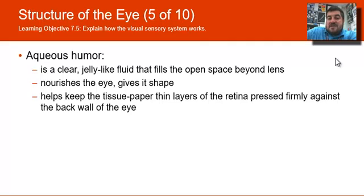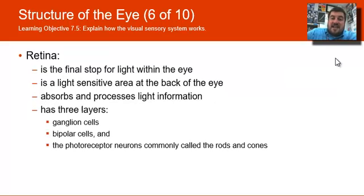The aqueous humor is in the front; the vitreous humor fills the open space behind the lens. The retina is the final stop for light in the eye.